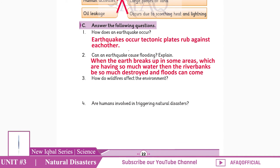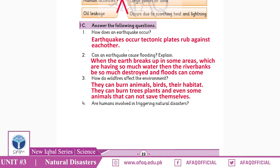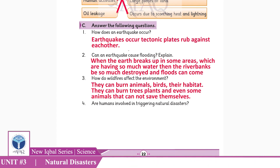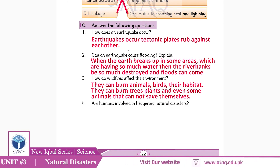Question three: How do wildfires affect the environment? They can burn animals, birds, and their habitat. Wildfires can burn trees, plants, and even some animals that cannot run to save themselves.